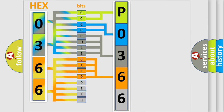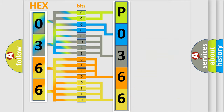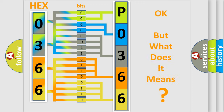A single byte conceals 256 possible combinations. We now know in what way the diagnostic tool translates the received information into a more comprehensible format. The number itself does not make sense to us if we cannot assign information about what it actually expresses.